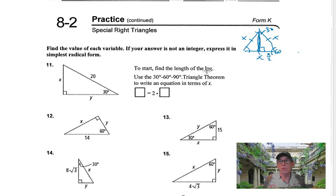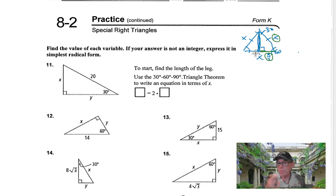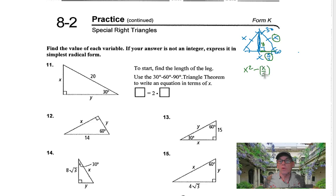The altitude bisects the vertex angle, making it a 30-degree angle, and it gives us a perpendicular to the base at the midpoint. So this side over here is going to be X over 2. This length here is X over 2, this length here is X, and this length here we can use the Pythagorean theorem to find. We'll call this Y. Using the Pythagorean theorem, we've got a hypotenuse X, so X squared, minus one of the legs squared, which is X over 2 squared, equals Y squared.